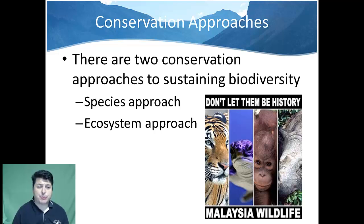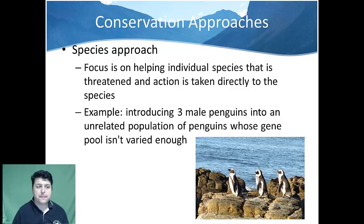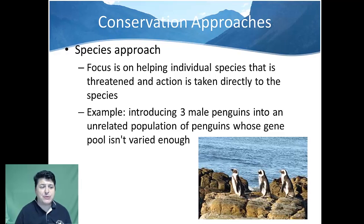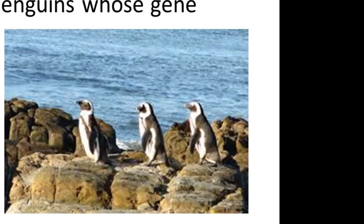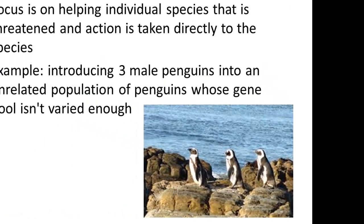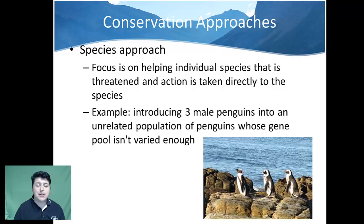There are two conservation approaches to the sustaining of biodiversity: the species approach and the ecosystem approach. The species approach focuses on helping individual species that are threatened by taking action directly surrounding the conservation of that particular species. For example, if we had a population of penguins with very low genetic diversity and we introduced three new male penguins, that action would increase the potential diversity of that gene pool and assist with sustaining that particular population — impacting only that species.